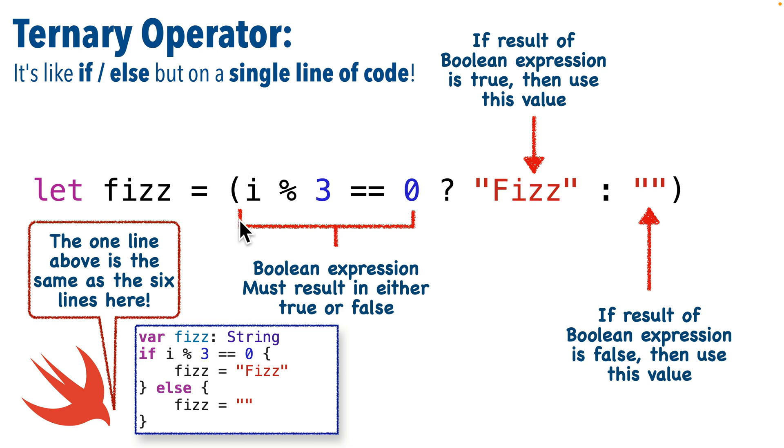Now as a refresher, the ternary operator has three parts. First we evaluate a boolean expression, meaning this part here must return either true or false. Now if the result of the expression is true, then we use what comes after the question mark. Sort of like if the if clause in an if-else statement is true. But if this statement is false, then we use what comes after the colon, which is sort of like the else clause in an if-else statement.